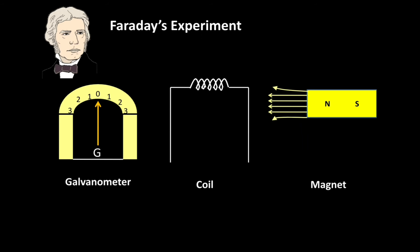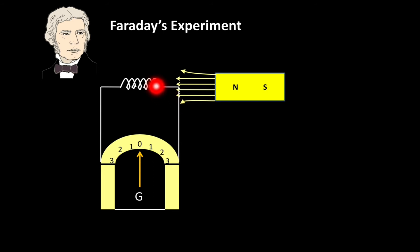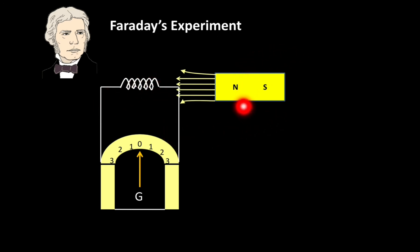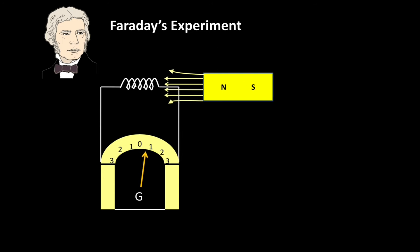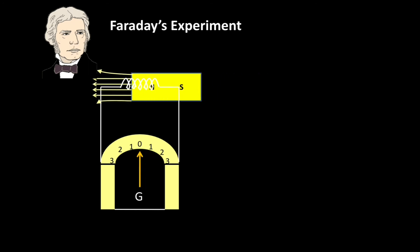Faraday played with these three things and performed an experiment that led to a conclusion. He connected the coil to the galvanometer. This galvanometer has a central tap needle that deflects only when there is flow of current in the coil. Then Faraday took the magnet, which has magnetic lines of force — that is, magnetic flux. When Faraday moved the magnet near to the conductor, there was deflection in the needle, meaning current was getting induced in the coil.